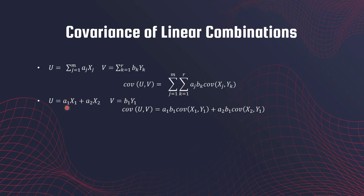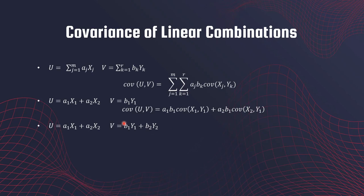We have a₁x₁ and b₁y₁ first, so we get the covariance between x₁ and y₁. Then we look at the second term a₂x₂ and b₁y₁, and that appears in the next part of the covariance formula.